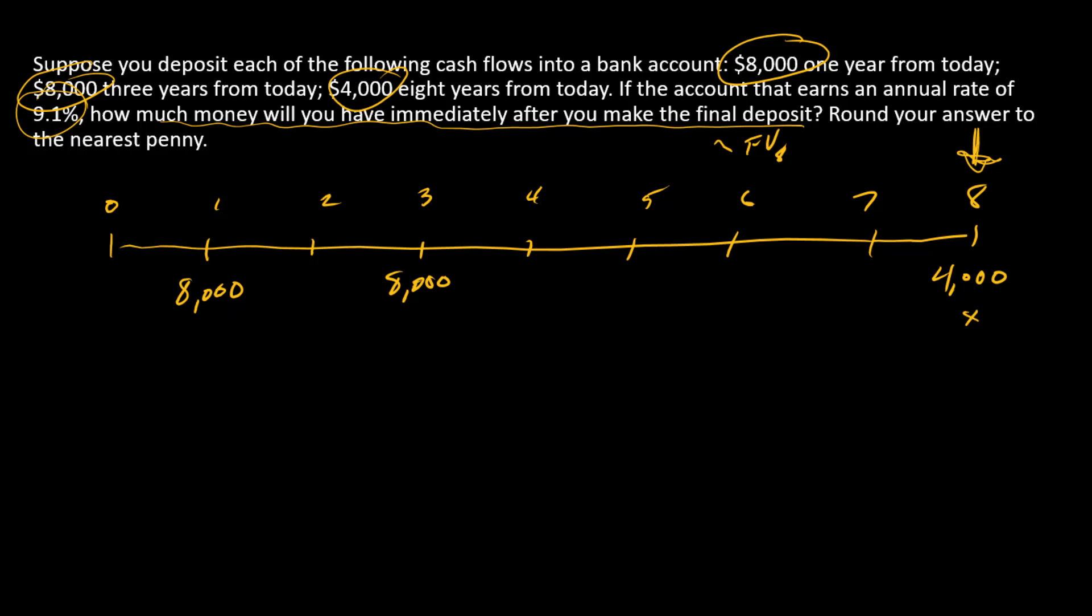This first cash flow, it is what it is, so we don't have to compound that forward since it happens at time eight. This cash flow we've got to go forward one, two, three, four, five years, and this cash flow we've got to go forward seven years.